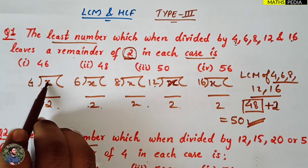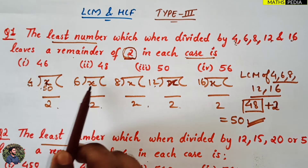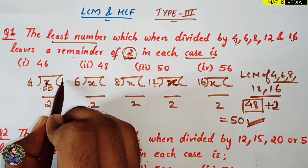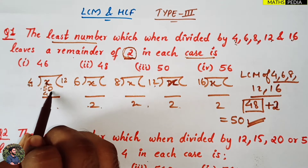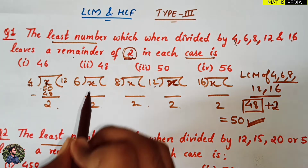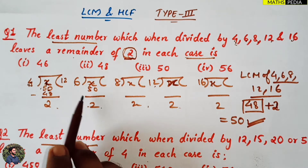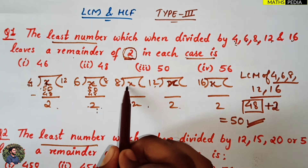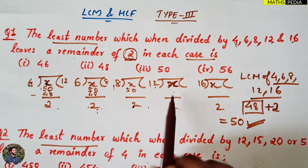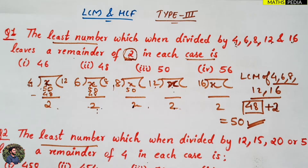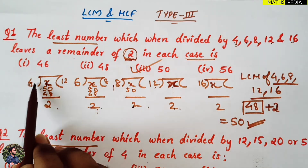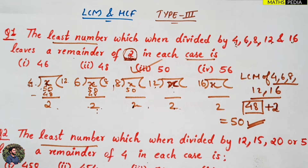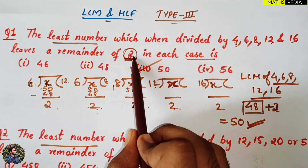Just check once — substitute 50 here. X value will be 50 for all cases. When you divide 50 by 4: 4 twelves are 48, so remainder is 2. When you divide 50 by 8: 8 sixes are 48, so remainder is 2. Similarly for 6, 12, and 16, you keep getting remainder 2. So 50 is the least number. Simple: take LCM of the divisors, add the remainder, and you get the answer.